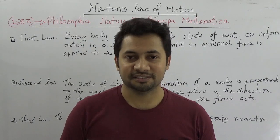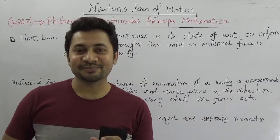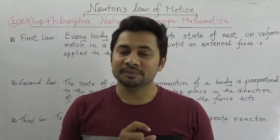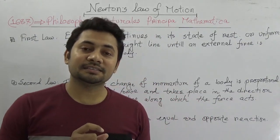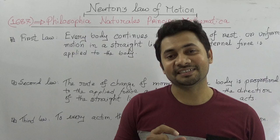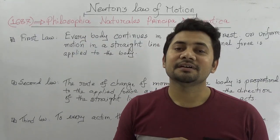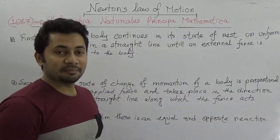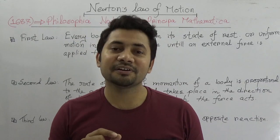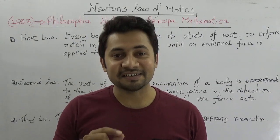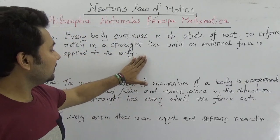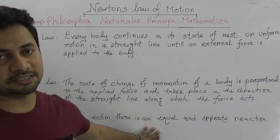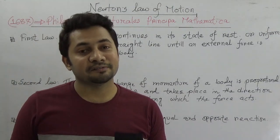What are Newton's laws of motion? There are three laws of motion by Newton. In 1687, the British scientist Sir Isaac Newton published a book called Philosophia Naturalis Principia Mathematica. In this everlasting book, the three equations and three laws of motion were published, and this is a very important topic in the chapter of motion.